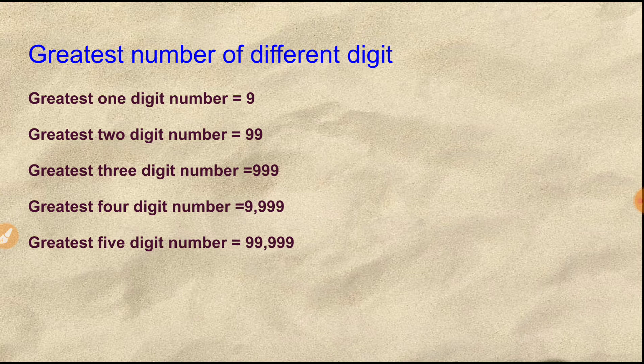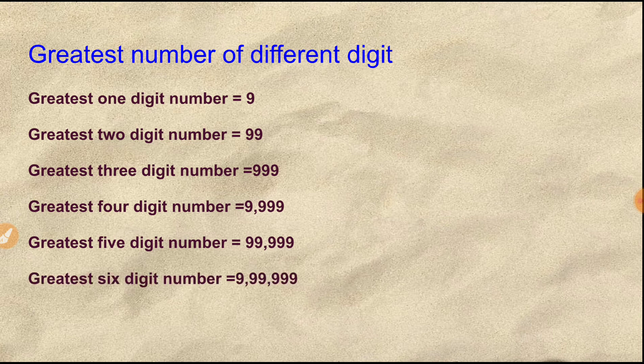As you can see, we are using the digit 9 to form the greatest 1-digit number, greatest 2-digit number, greatest 3-digit number, greatest 4-digit number, greatest 5-digit number, and so on. The greatest 6-digit number is 9,99,999. So I hope you have understood how to form the smallest and the greatest number of different digit counts.